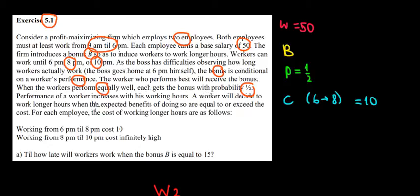Whoever works more performs better. A worker will decide to work longer when the benefits of doing so exceed the cost. Working from 6 to 8, so working two extra hours costs 10 more euros worth of utility. Working from 8 to 10 costs infinitely high. In part A, until how late will the workers work when the bonus is equal to 15?